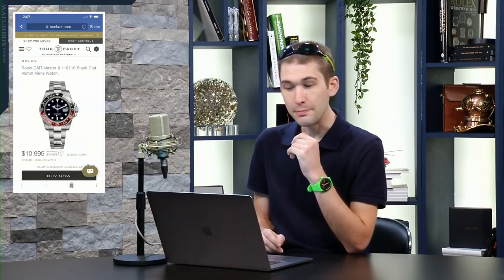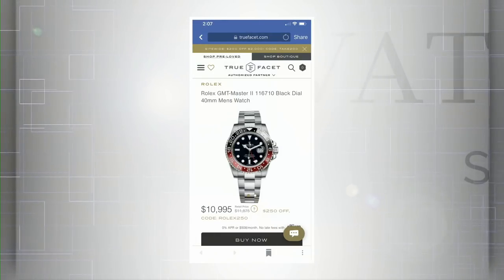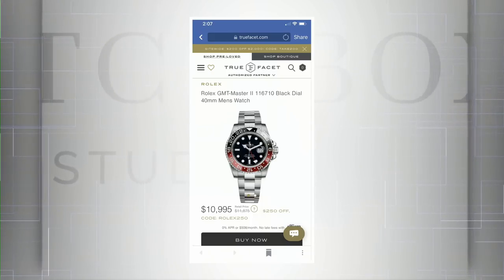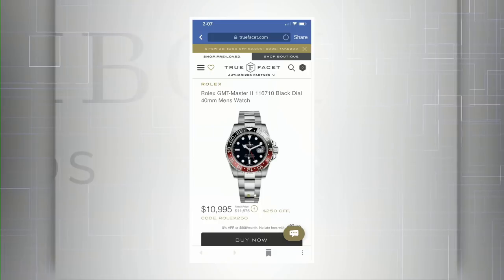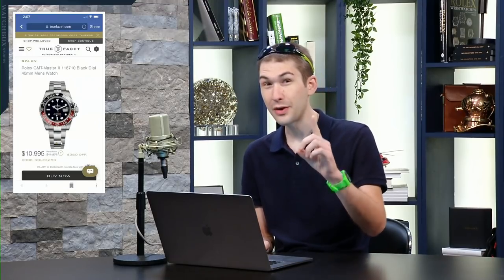Did you know that Rolex makes a ceramic Coke bezel GMT? I didn't either until I saw it right here available for immediate delivery from TrueFacet. They even tossed in a $250 discount. I'm not really sure where that discount number comes from because a steel Pepsi GMT costs $9,250 US, but they've kindly knocked this one down to $10,995. If you're going to invent a watch, at least price it competitively. Thank you TrueFacet and mad props to John B for helping the cabin make it happen.